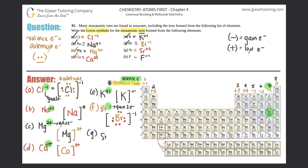G — strontium, which was a two plus charge. Strontium is group two; it has two valence electrons: one and two. However, it's a two plus, which means that you lose two electrons. So the two that were in the valence shell get lost, and now strontium has no more electrons. We box that answer off and put a two plus.